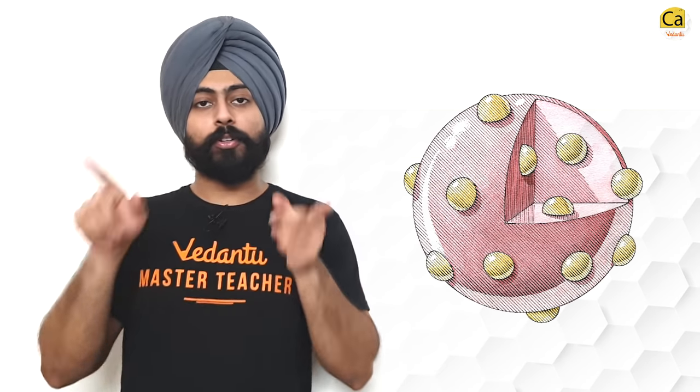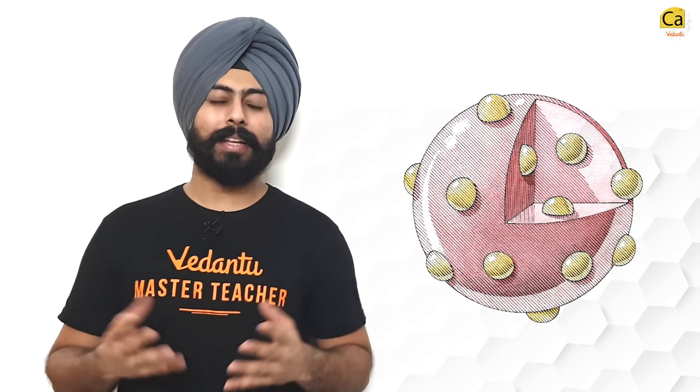Now that the subatomic particles were discovered, people started working on different models of the atom. The first notable model was given by J.J. Thomson, which we all know as the plum pudding model, where you have a positively charged sphere with negative electrons embedded in it, like a plum pudding or a watermelon with seeds.